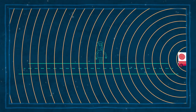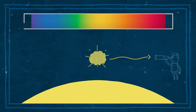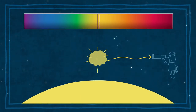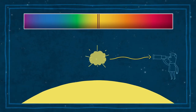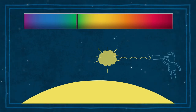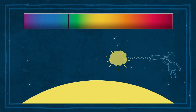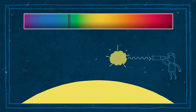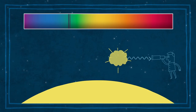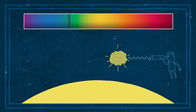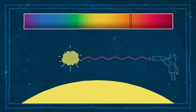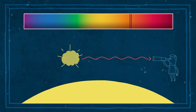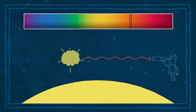Sie können die Tonhöhen im Geräusch des Martinshorns hören. Lichtwellen unterliegen ebenfalls dem Doppler-Effekt. Gas, das sich auf uns zubewegt, erzeugt Spektrallinien, die ins Blaue verschoben sind. Gas, das sich wegbewegt, erzeugt rot verschobene Linien.